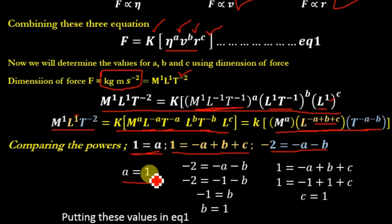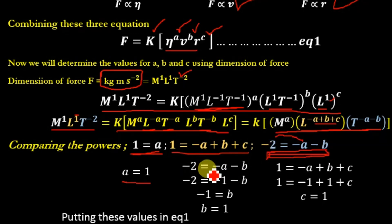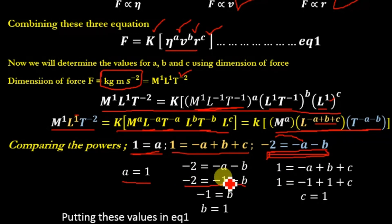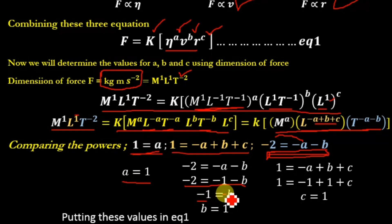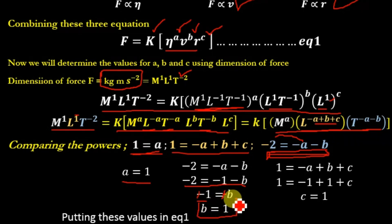Substituting A = 1 into the time equation: −2 = −1 − B. Transferring −1 to the left side: −2 + 1 = −B, so −1 = −B. The negatives cancel, giving B = 1.